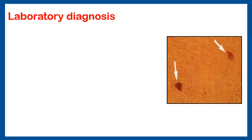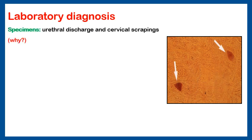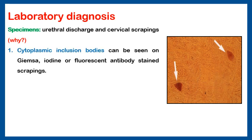Laboratory diagnosis. We can detect Chlamydia inside cells by what we call cytoplasmic inclusion bodies. Inside the cell, we will see the cytoplasmic inclusion bodies — the elementary bodies inside the cells. They can be seen if they are stained with Giemsa stain, iodine, or fluorescent antibody stain.